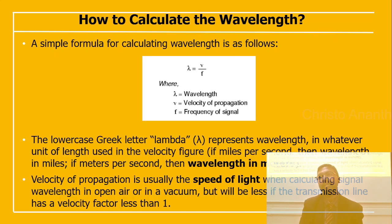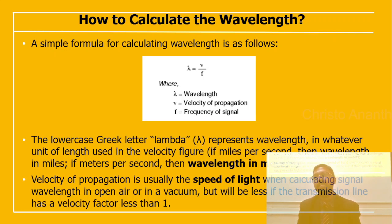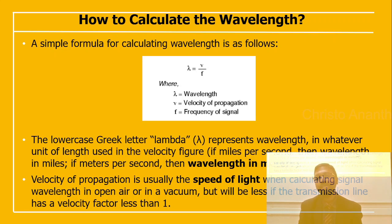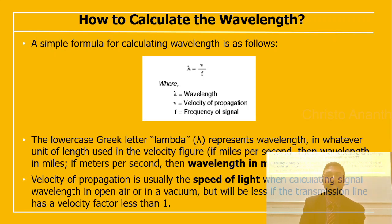There is a simple formula for calculating the wavelength: lambda equals V divided by F, where lambda is the wavelength, V is the velocity of propagation, and F is the frequency of the signal. The unit of wavelength matches the unit used for velocity — if velocity is in meters per second, wavelength is in meters. The velocity of propagation is usually the speed of light, approximately 186,000 miles per second, when calculating signal wavelength in open air or vacuum, but it will be less if the transmission line has a velocity factor less than unity.